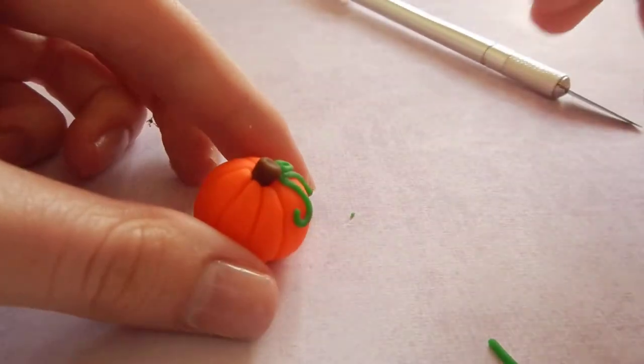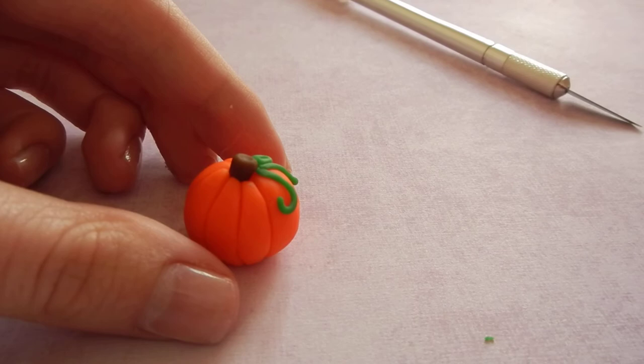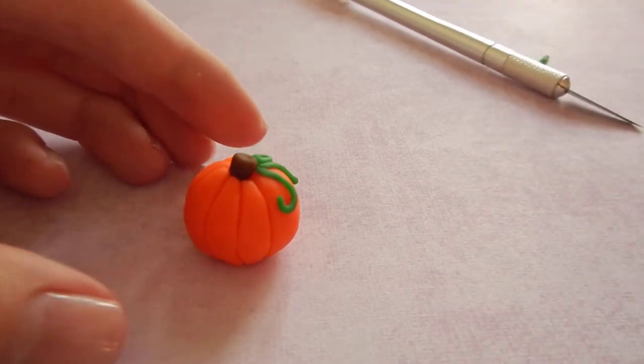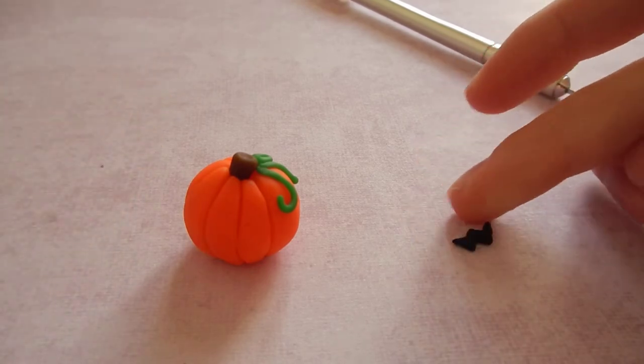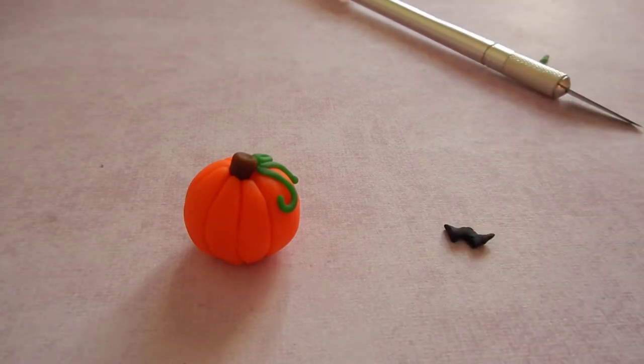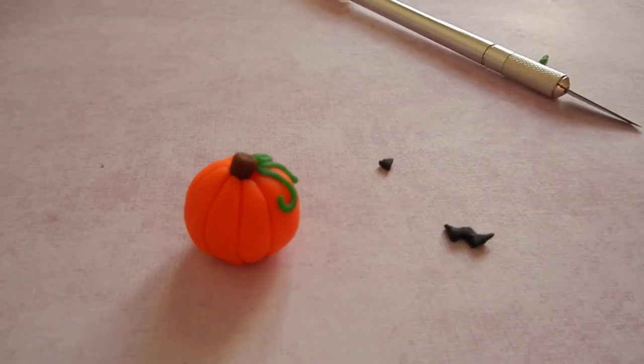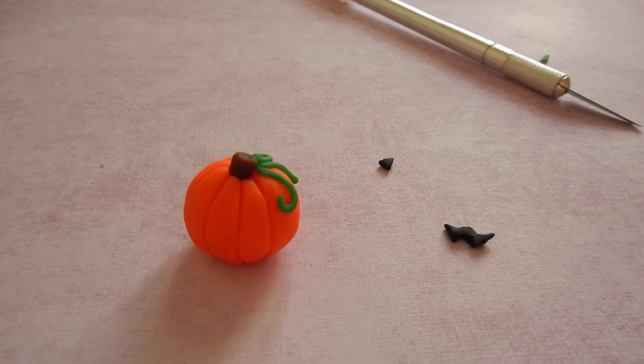So there are the vines. Now, of course, for the jack-o-lantern face, I have it pre-cut out right here if I can grab it. Now I have black play-doh, which I purchased in a 24-pack of color play-doh.